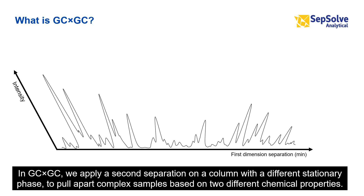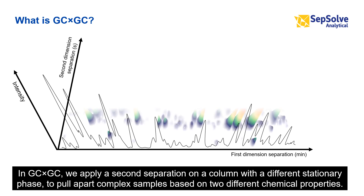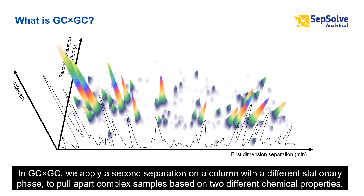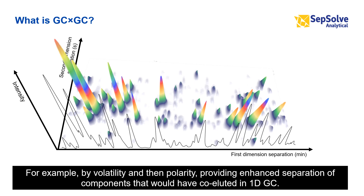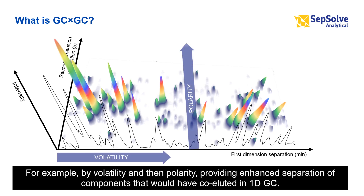In GC×GC, we apply a second separation on a column of a different stationary phase to pull apart complex samples based on two different chemical properties — for example, by volatility and then polarity — providing enhanced separation of components that would have co-eluted in 1D GC.